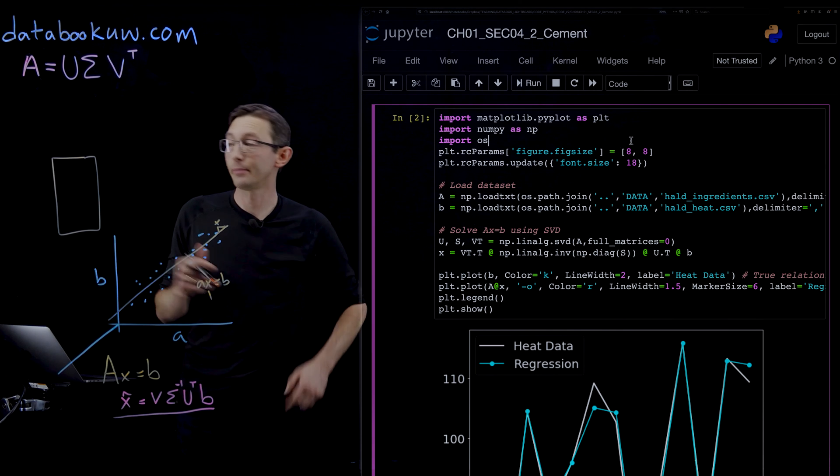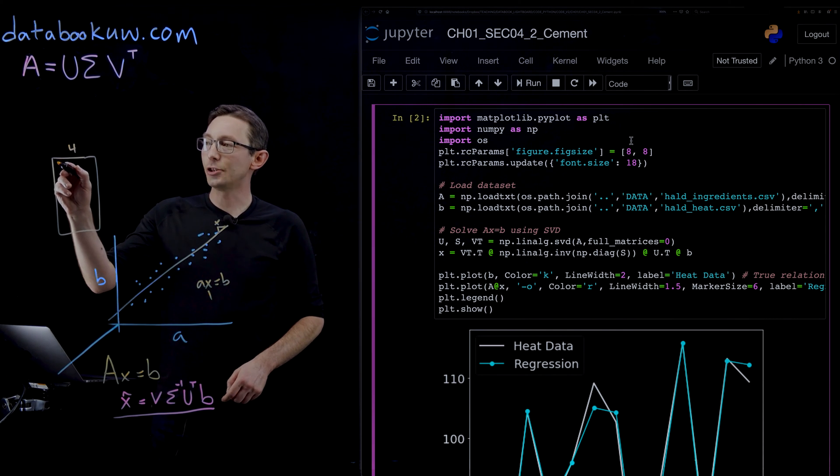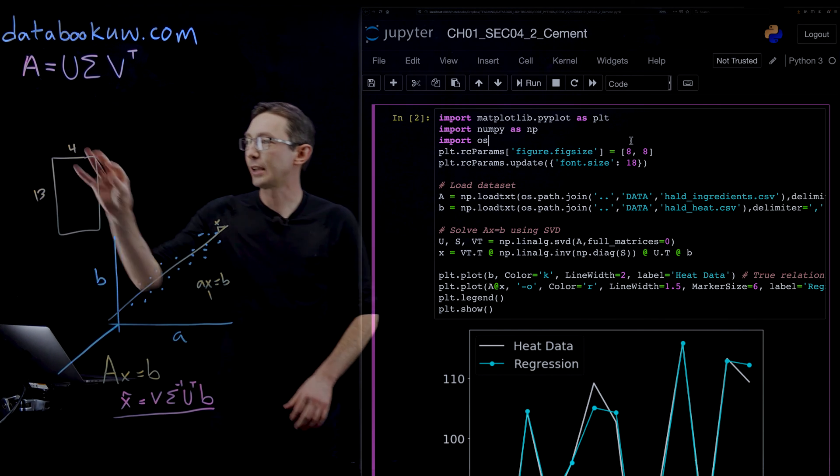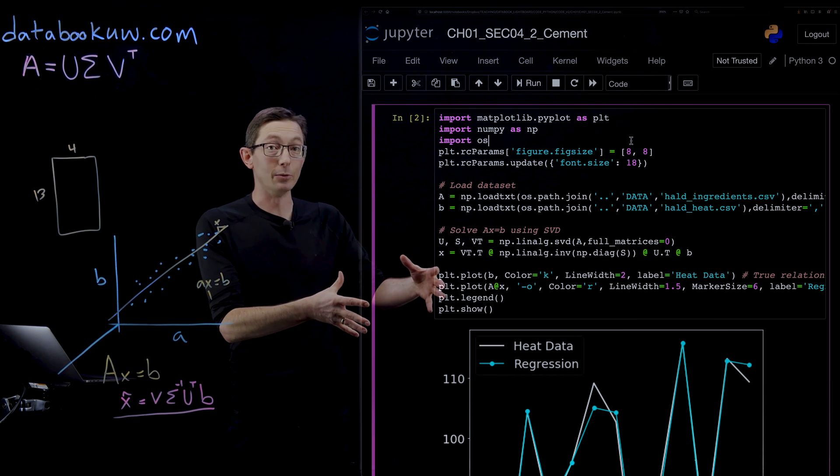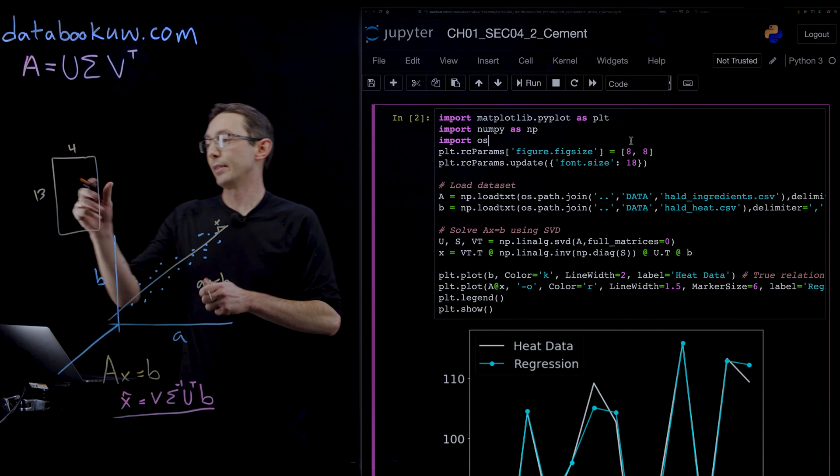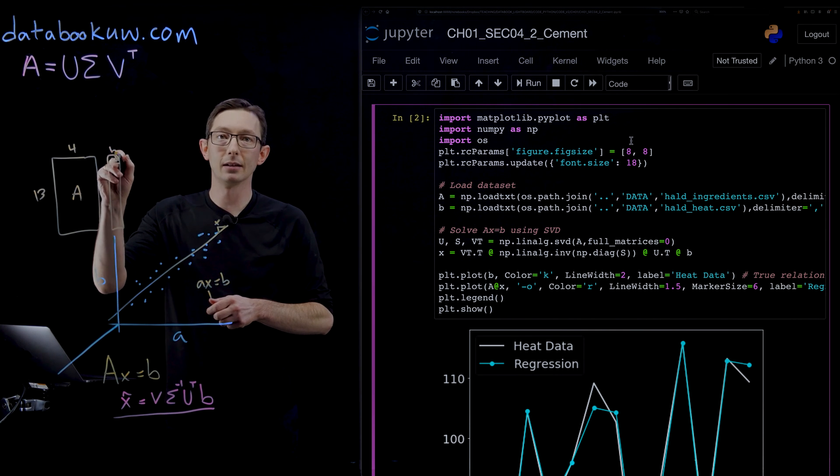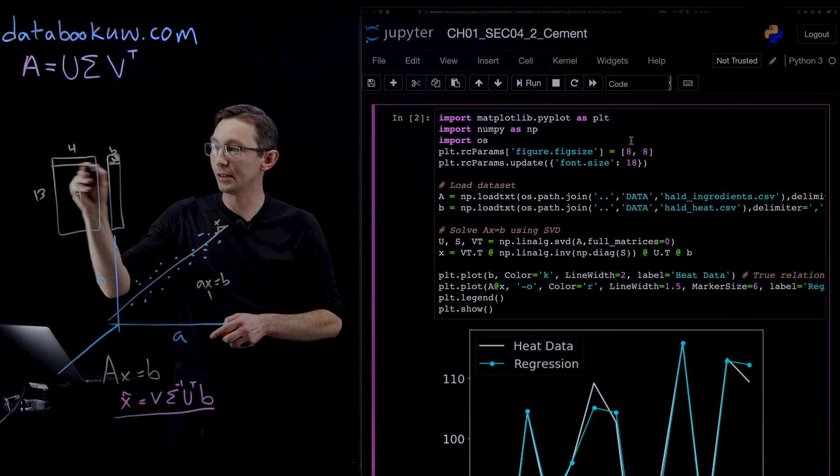What this data set consists of are 13 experiments where you have essentially four possible ingredients that you can mix up to make cement. This has four columns and each row is one of 13 experiments. I take a particular mixture of these four ingredients, mix them up, and measure how much heat was generated in that experiment. That would be the first entry of this B vector—the amount of heat from those ingredients.